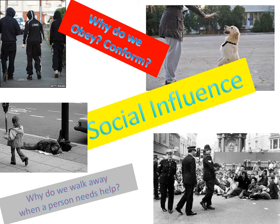The first area we look at at GCSE is related to social influence — the idea of how does the society that surrounds us influence us and cause us to change our behaviour. Why do we obey certain people and not others, why do we conform, and why do we walk past people who need our help just because society has dictated that is what we do in that particular instance.